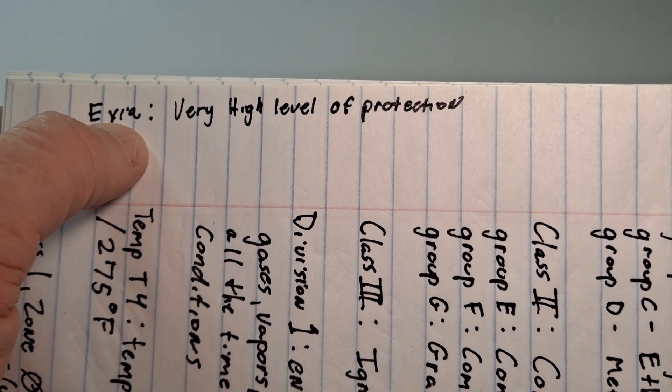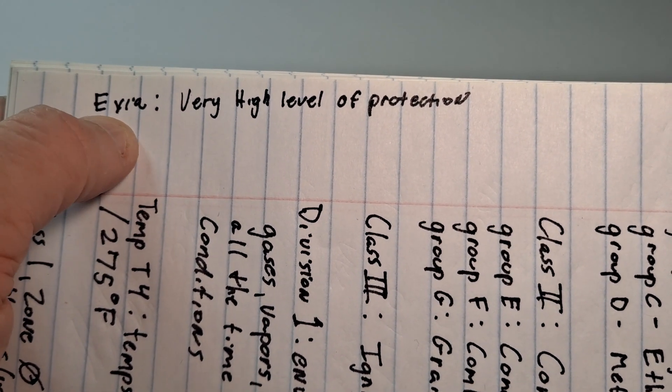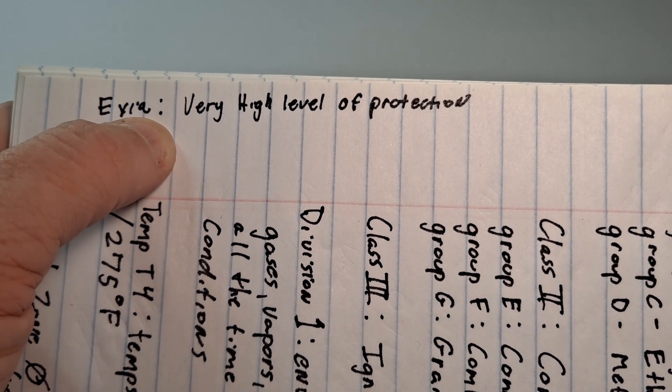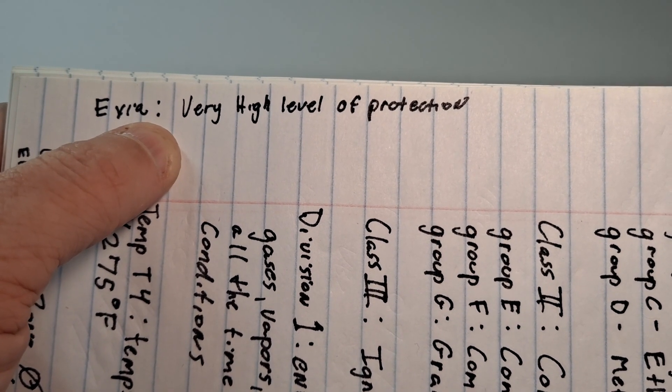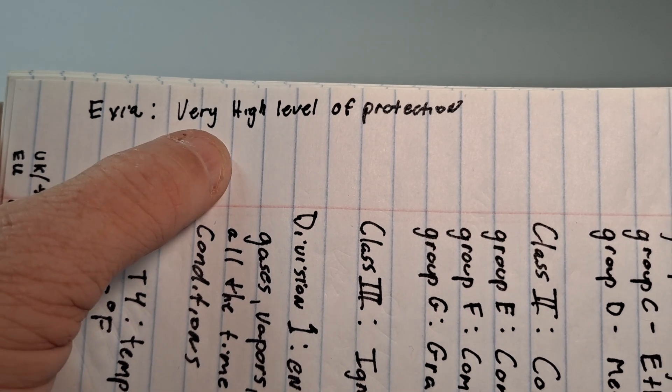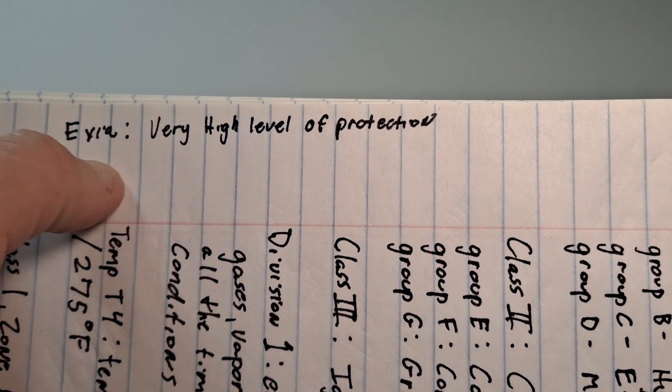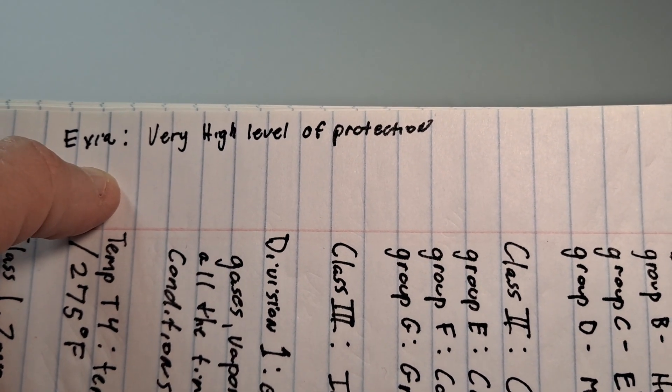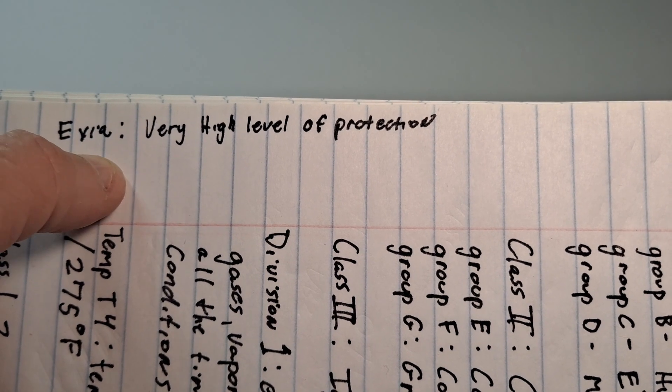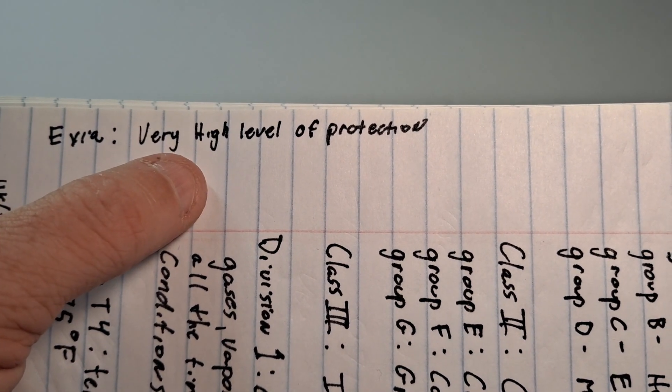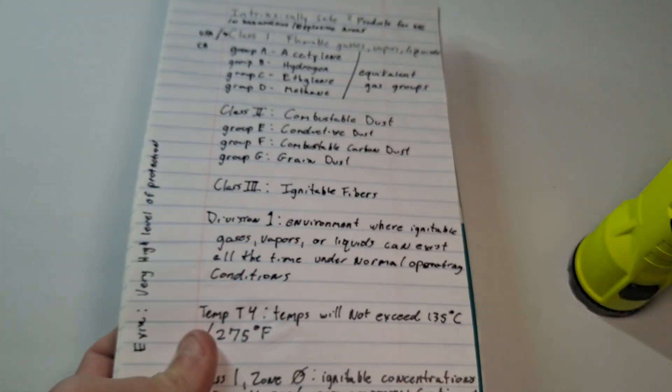And there's one other term on the side here and I ran out of room for it. The EXIA, it's actually EX space I space A. Very high level protection. So this is also the European Union thing. If anything is listed as EXIA, that is a very high level of protection in a hazardous condition.